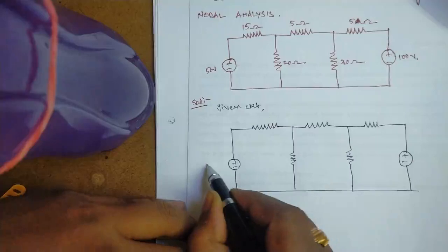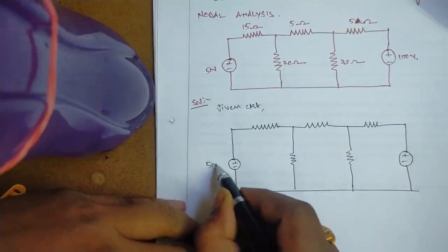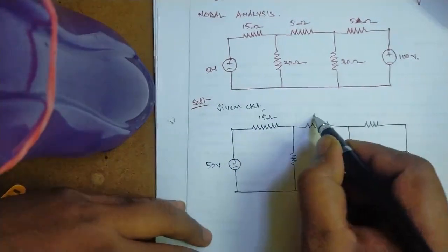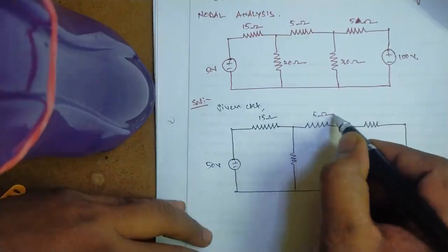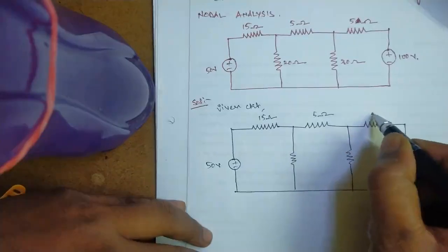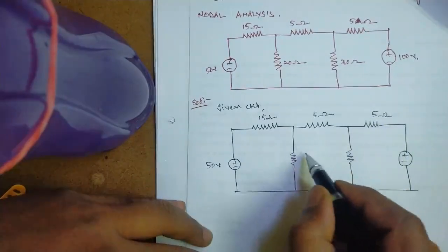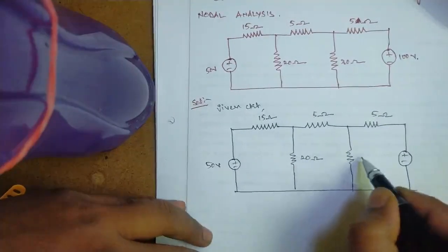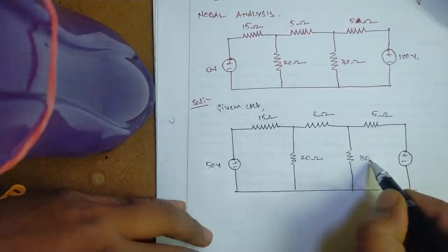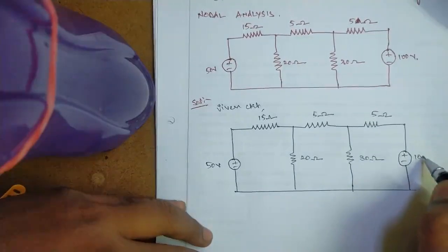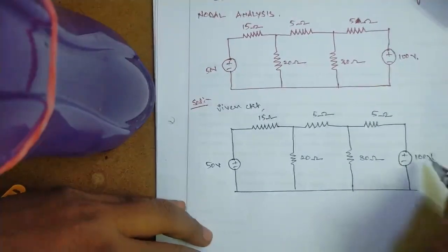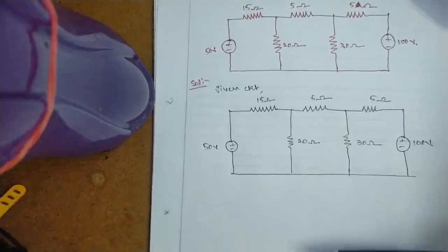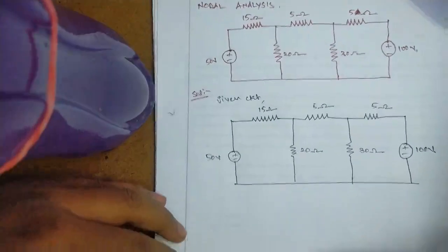In the given circuit we have: 50 volts, 15 ohms, 5 ohms, another 5 ohms, 20 ohms, 30 ohms, and 12 ohms.